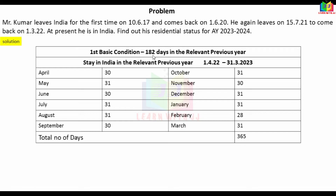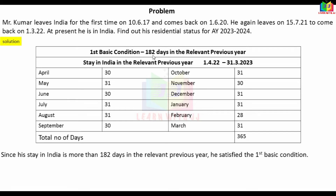Our first basic condition will be satisfied with 182 days. If we are satisfied with one basic condition, he will be a resident. Now, our additional conditions will also need to be examined. Additional condition 1 requires that out of 10 previous years, at least 2 years the person must be a resident.